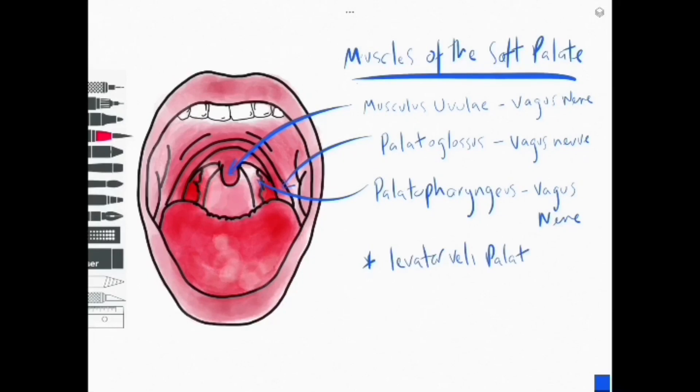The palatoglossus is also a tongue muscle and is the odd man out in the sense that it's the only muscle innervated by the vagus from that group.